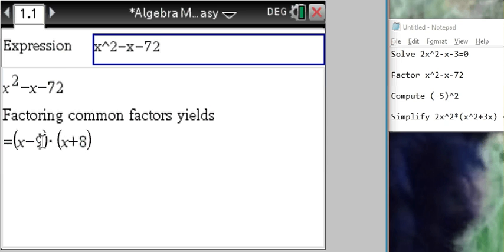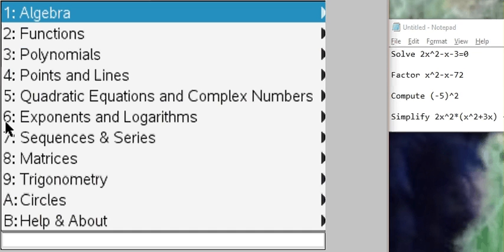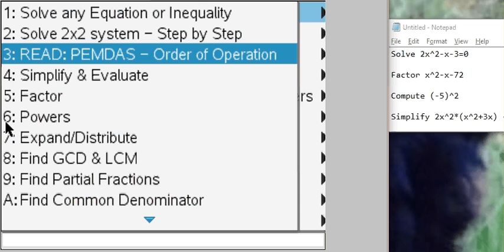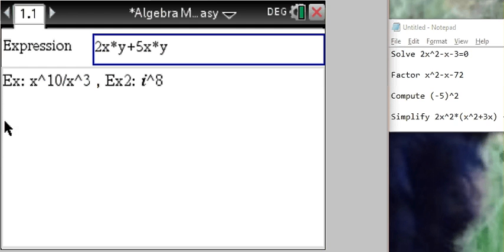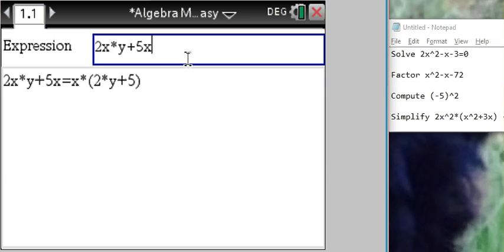Computing, that's the same as evaluating. We go to algebra option 4 and we just have to enter our expression. Negative 5 squared, we get 25.